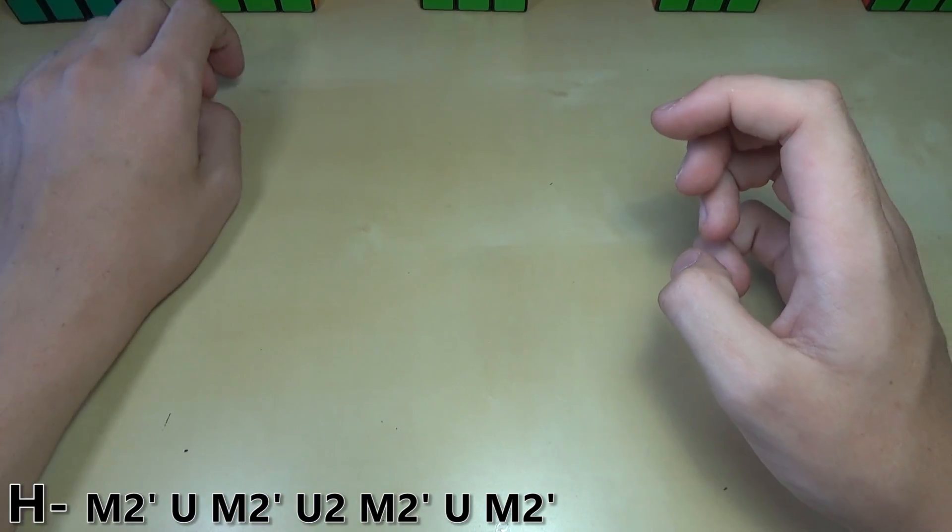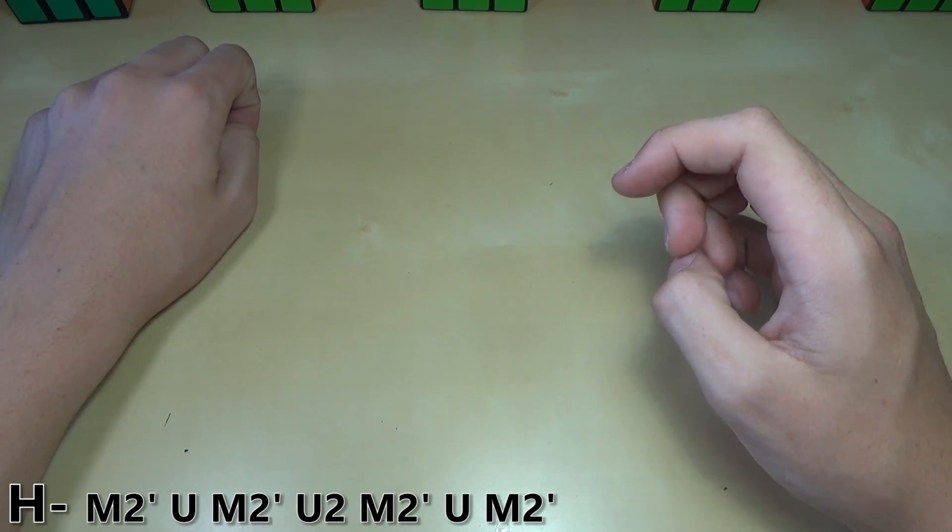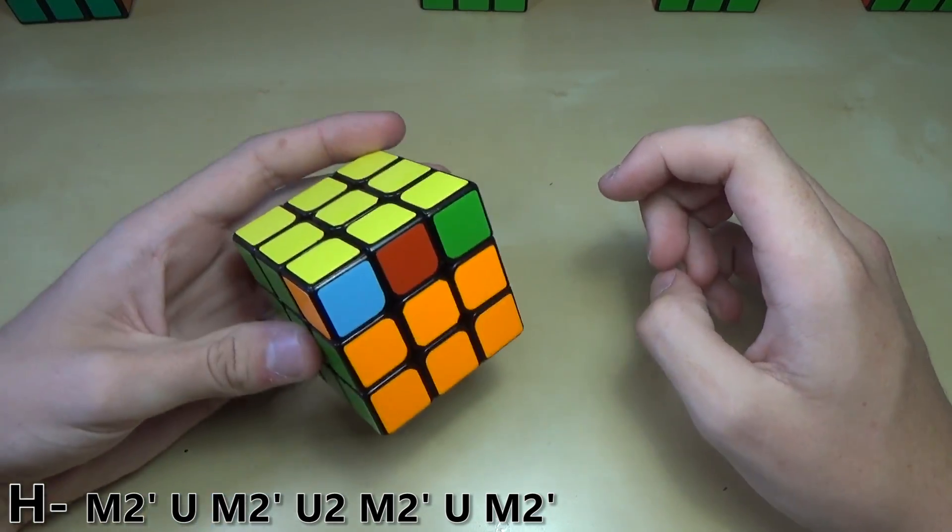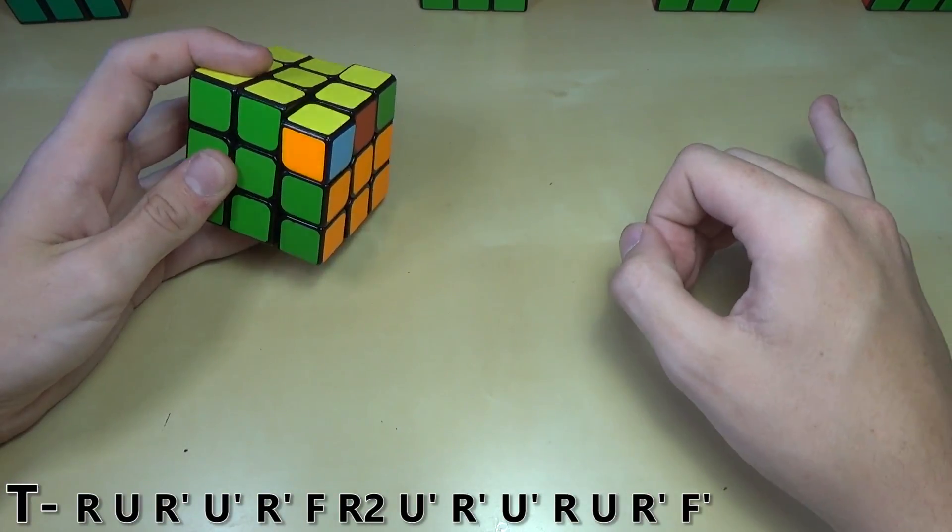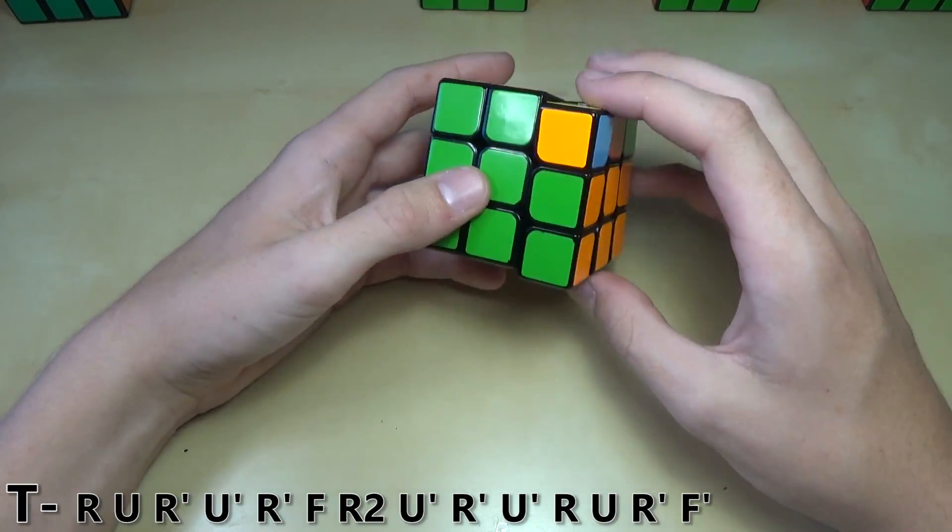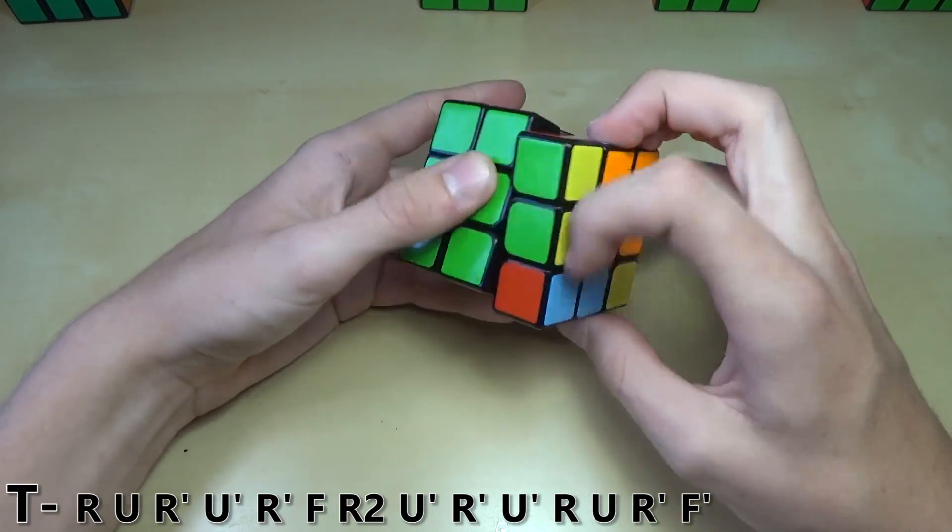Next up we have another interesting one that's also very popular. Most people know this one. It's just the T perm. This one is pretty similar to another one that I'm going to be showing you later. The reason for that is all the moves just flow really nicely.